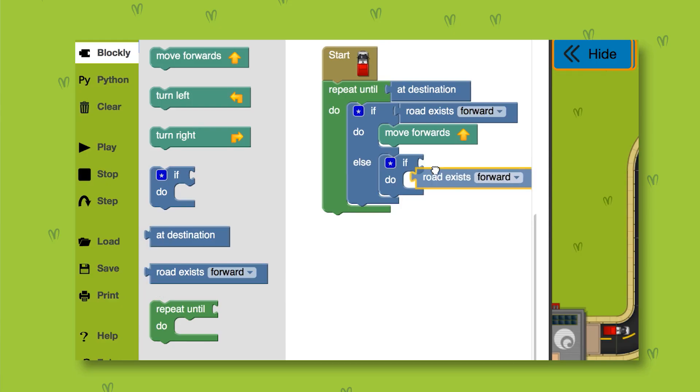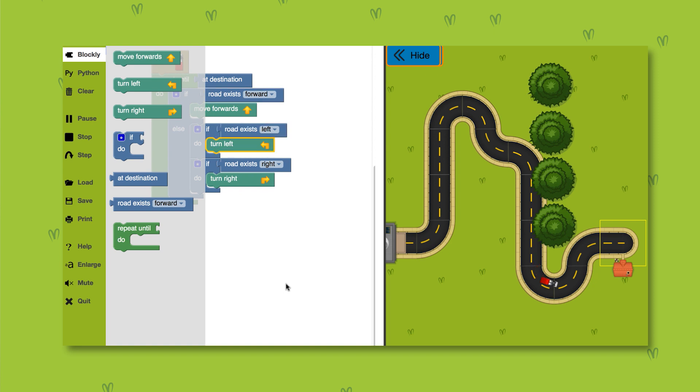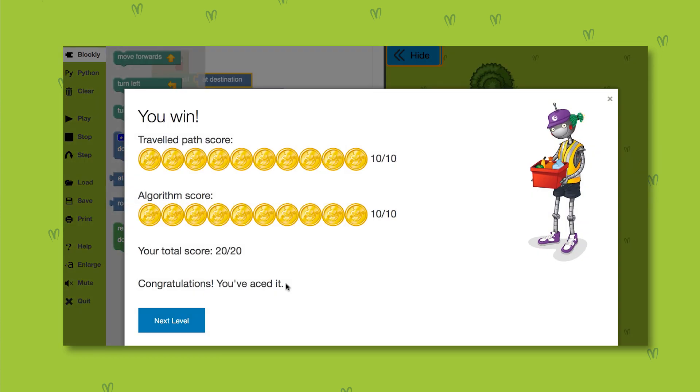Just like with the if statement block, you can tell the van to turn right if there is a road to the right. But if there's no road to the right, then the van can't move forward. The if-else statement lets you say that if there is no road to the right, then the van needs to turn left. That way the van can decide which way it needs to go on its own and find its way to the house without you having to put in every single step.